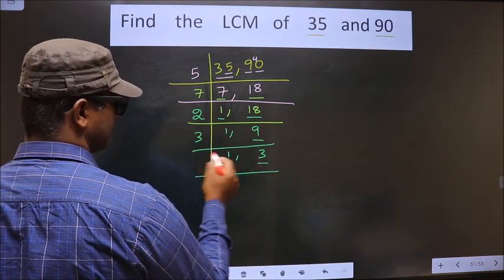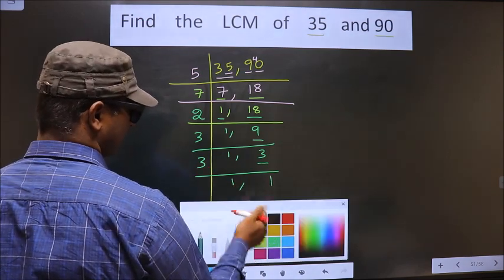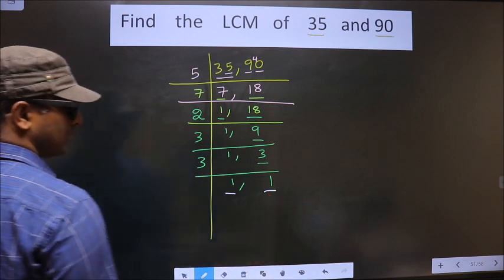Now, we got 3. 3 is a prime number, so we take 3 once 3. So now we got 1 in both the places.